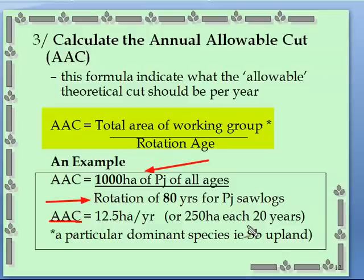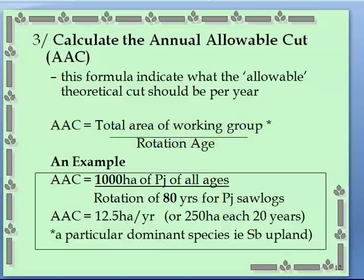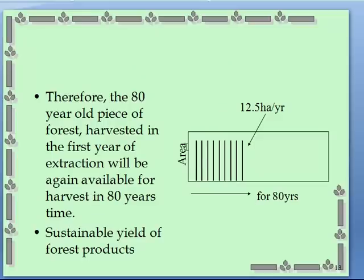The formula is simple: take the total area of the forest and divide by the rotation. So you have 1,000 hectares of jack pine of all ages and you want to grow them to 80 years of age. Therefore, your annual allowable cut for that jack pine forest would be 12.5 hectares per year, or 250 hectares every 20 years as the graph shows. The 80-year-old piece of forest harvested in the first year of extraction will again be available for harvest in 80 years.